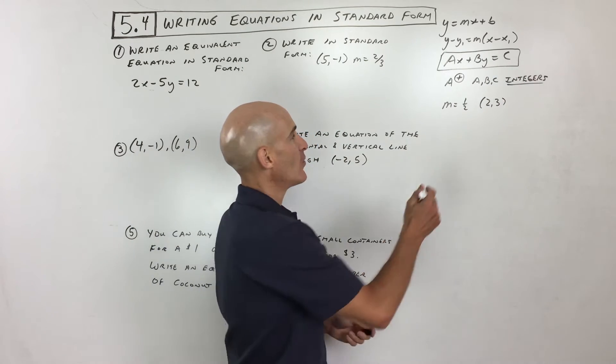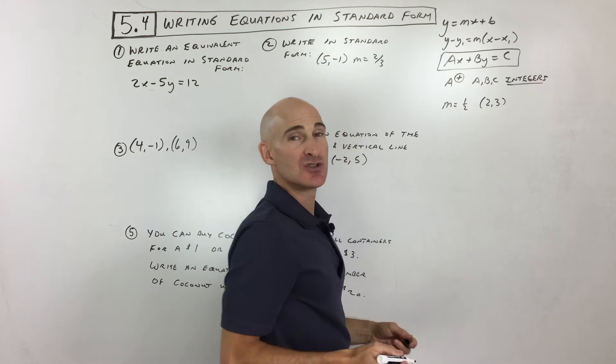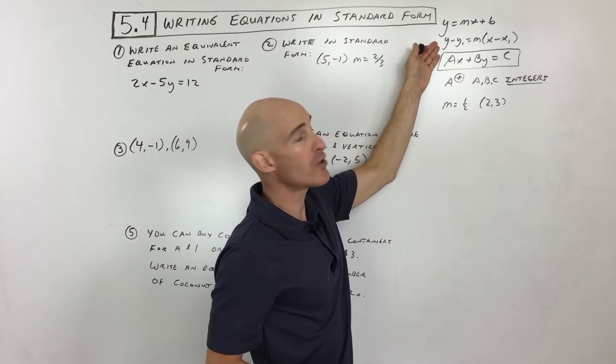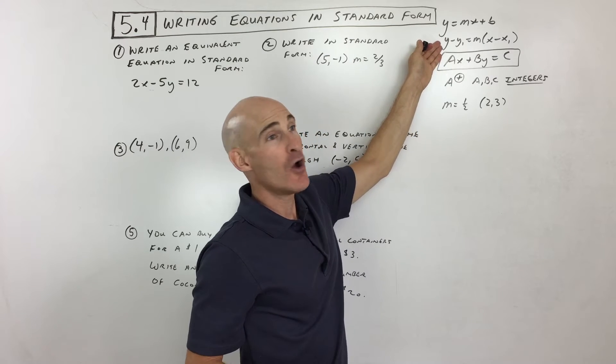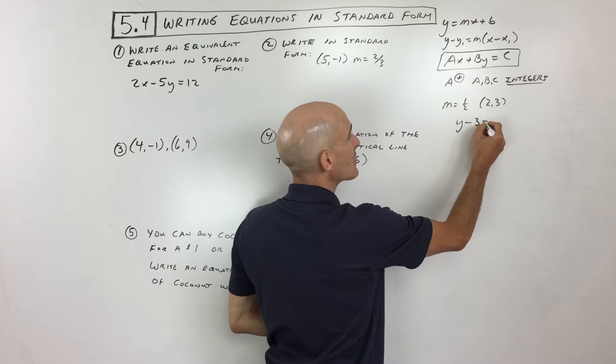So let's take a look at an example. So here they're giving us the slope is a half, and they give us the point 2, 3. So do you think we should start off with the slope-intercept form or the point-slope form? Okay, if you said the point-slope form, you're absolutely right, because we've got the point. Okay, so that makes it easy.